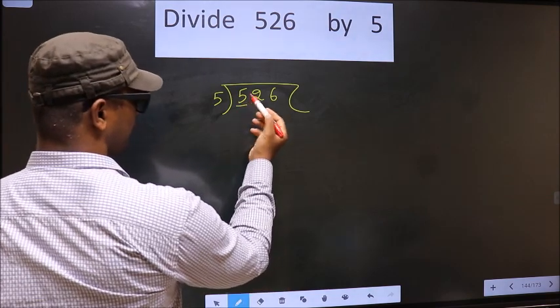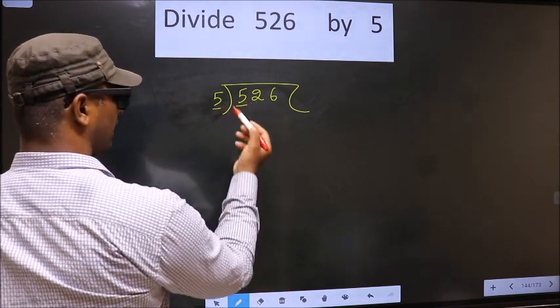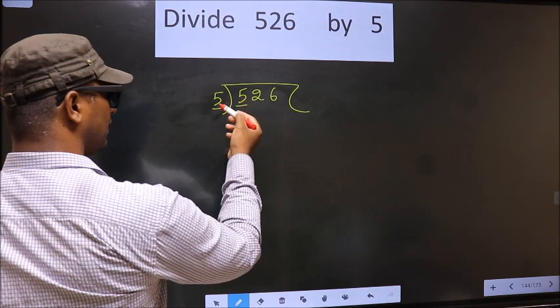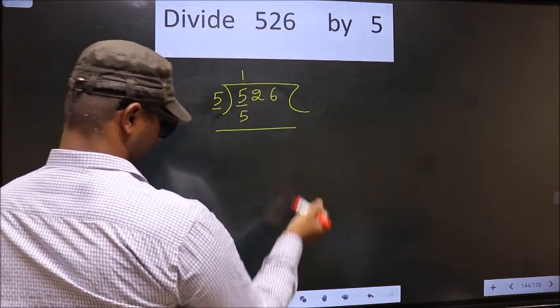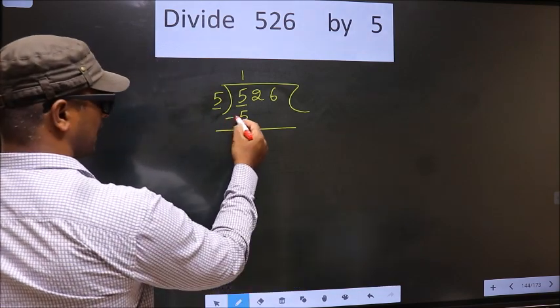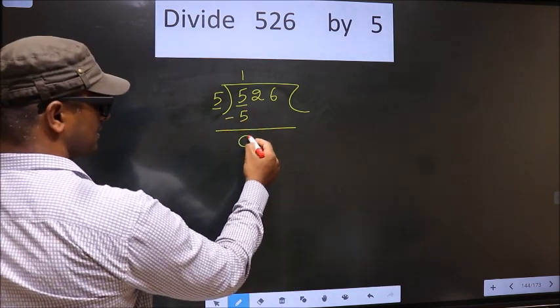Now here we have 5, and here also 5. When do we get 5 in the 5 table? 5 once is 5. Now you subtract. 5 minus 5 equals 0.